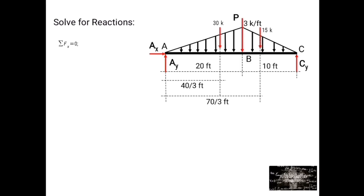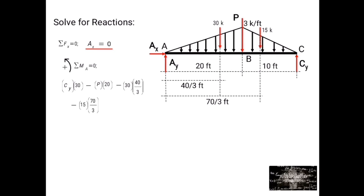Now solve for reactions. Summation of forces along X equals 0; by inspection, AX equals 0. For CY, summation of moment at point A equals 0, considering counterclockwise positive: CY times 30 minus P times 20 minus 30 times 40 over 3 minus 15 times 70 over 3 equals 0. So CY equals 25 plus 2P over 3.